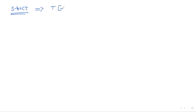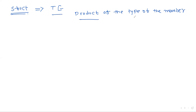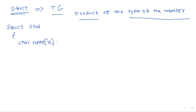Moving to struct: whenever we create a structure, the structure is defined using the keyword struct. The struct is also a type expression. It is applied to the product of the types of its members. For example, consider struct student { char name[10]; float marks; }. The structure has two members: name, which is a character array, and marks, which is of float type.